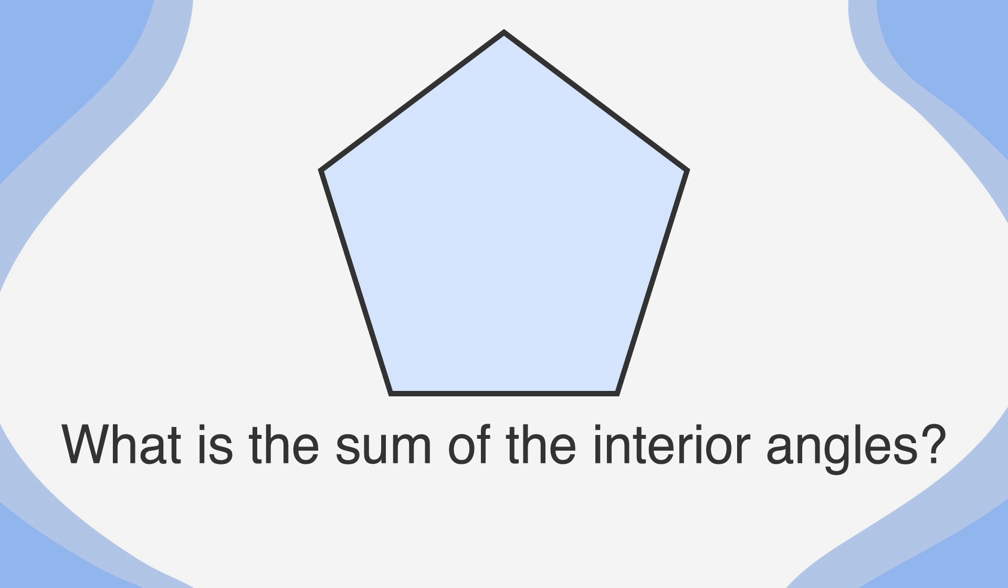There is one more way to solve for the missing angles. You can also divide the polygon into triangles. Here's what I mean. To find the sum of all angles for this pentagon, we need to start by picking a single corner, or vertex, of the pentagon.